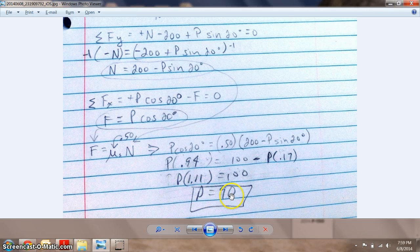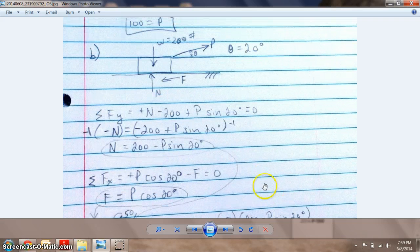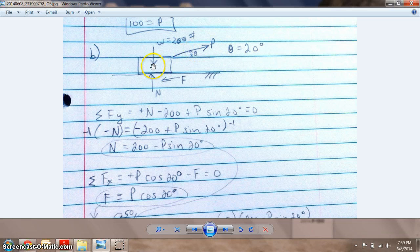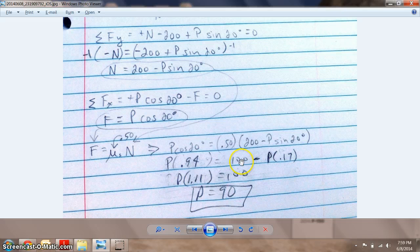When I divide 100 by 1.11, I get P equals 90. So the load, if it's pointing in the upward direction at 20 degrees, to overcome the friction force and get it to start moving would be exactly 90 pounds. I forgot my unit, sorry about that. So I should say 90 pounds at 20 degrees up. Hopefully this helps.